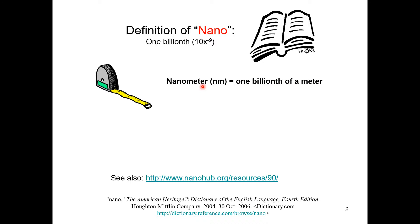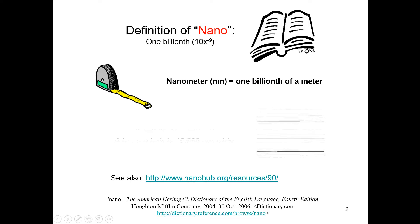Similarly, if you put second — which is the unit for time — you say you have nanoseconds. Nanoseconds would mean one billionth of a second.